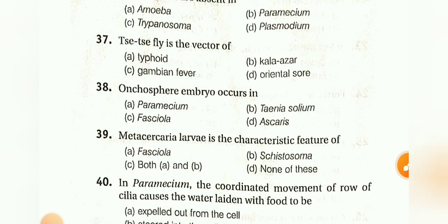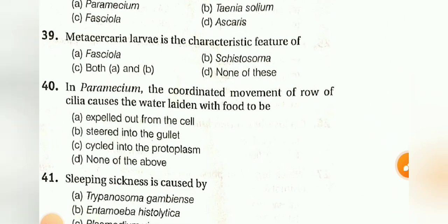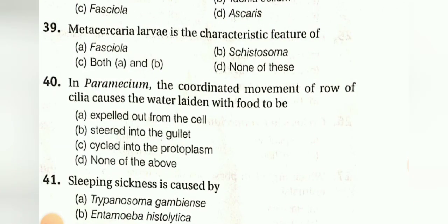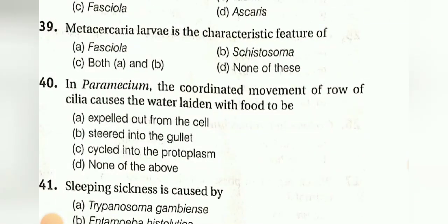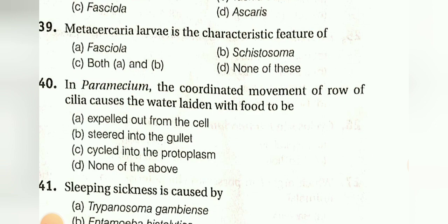In Paramecium, the coordinated movement of the row of cilia causes water laden with food to be: expelled out from the cell, stirred into the gullet, cycled into protoplasm, or none of the above. The answer is: stirred into the gullet.